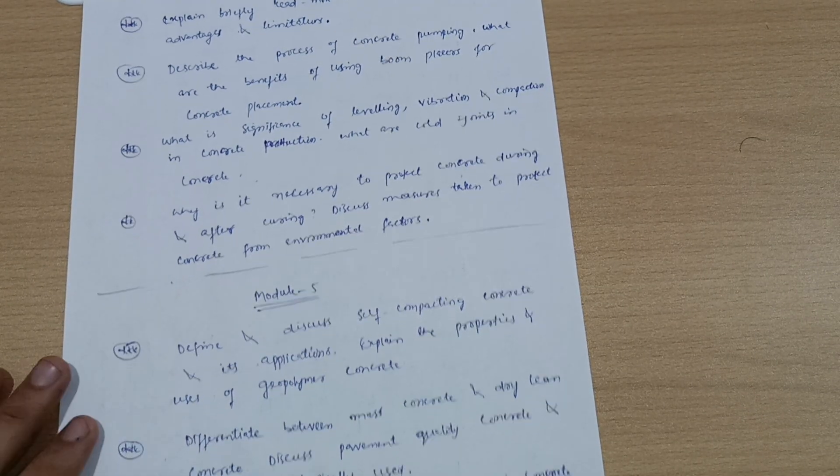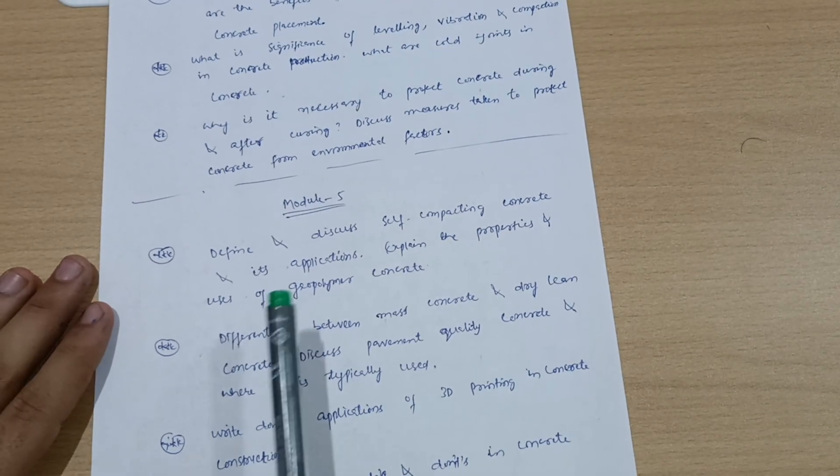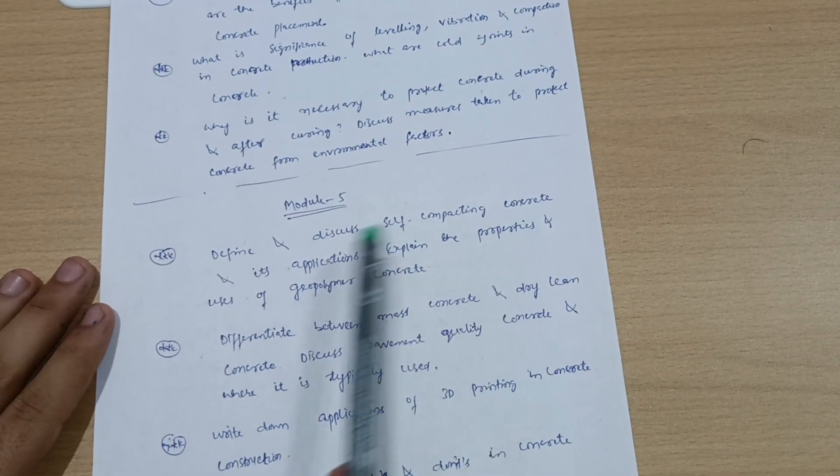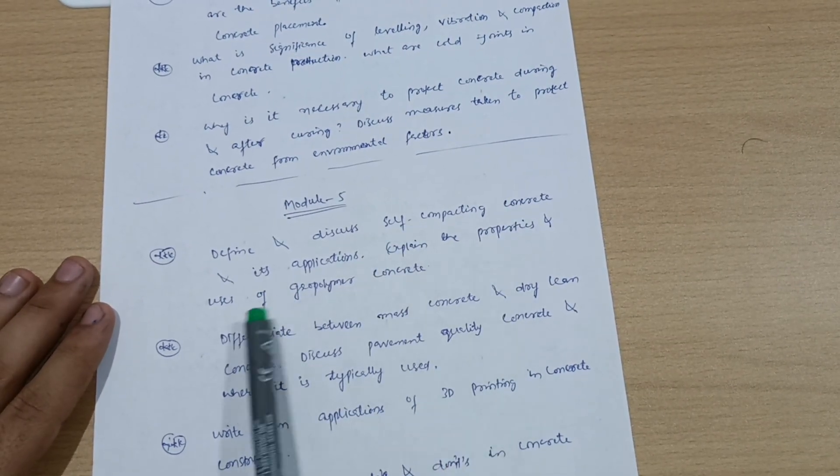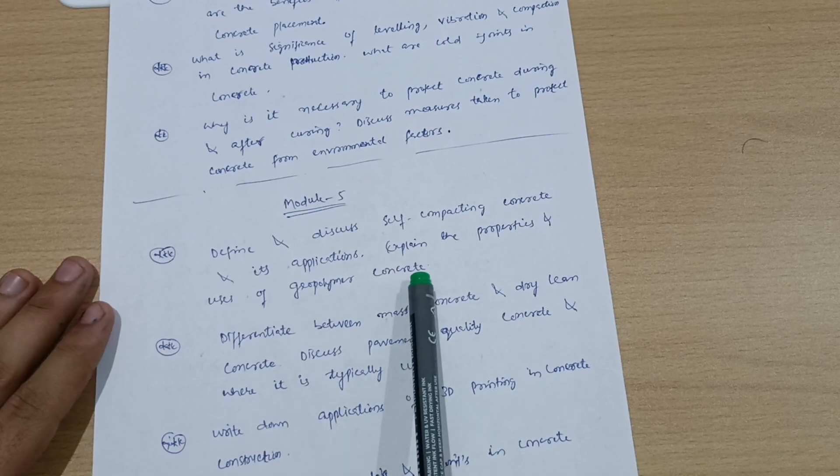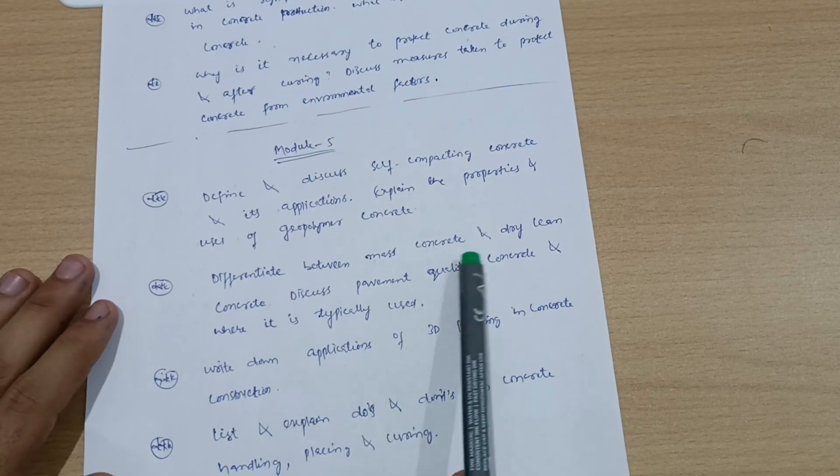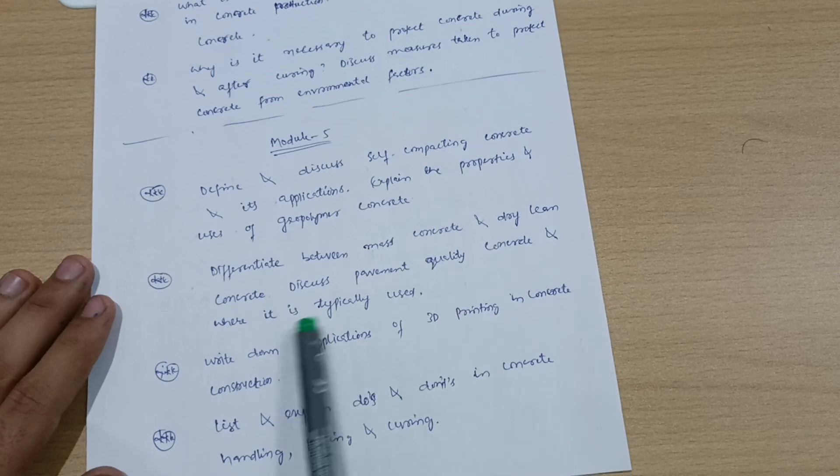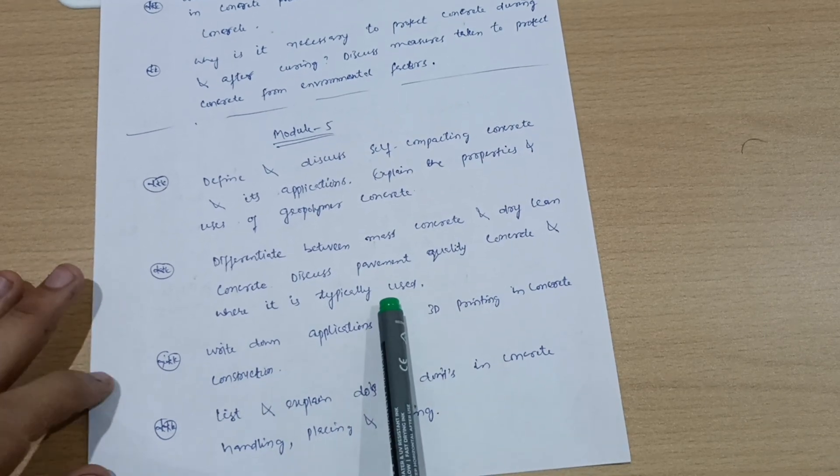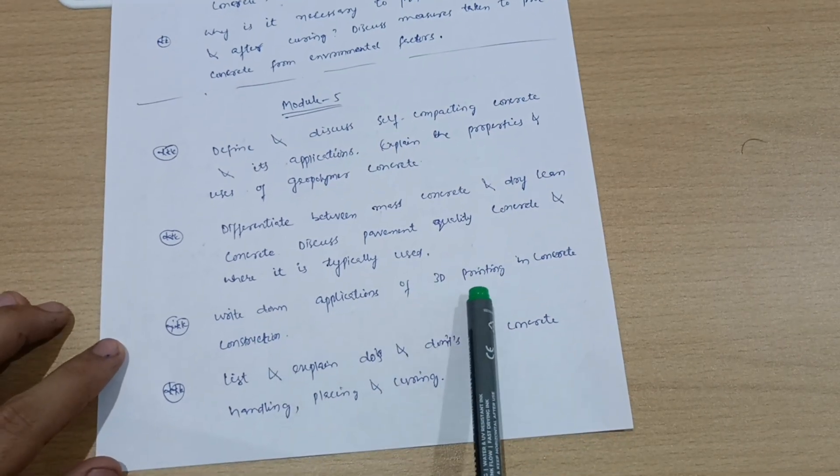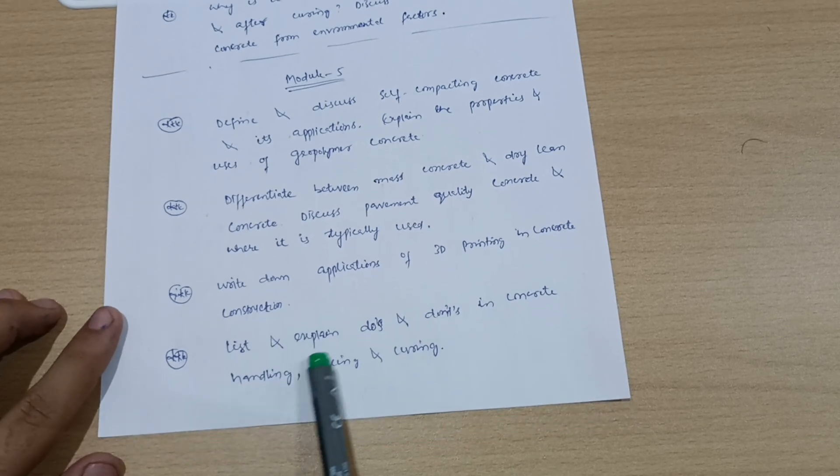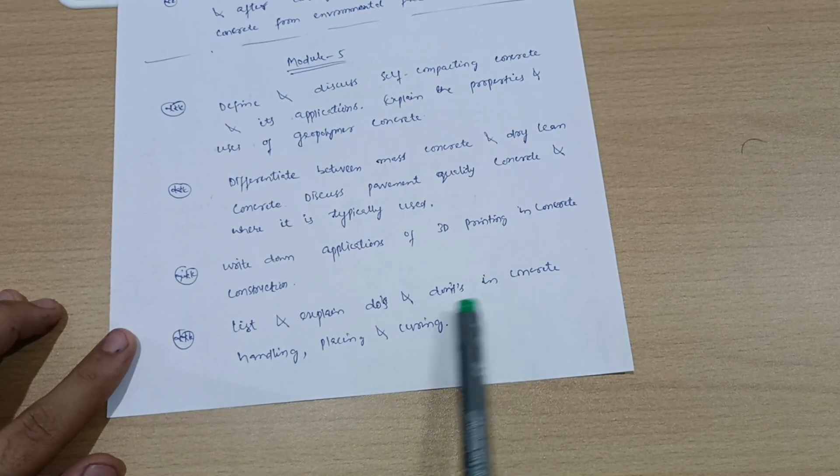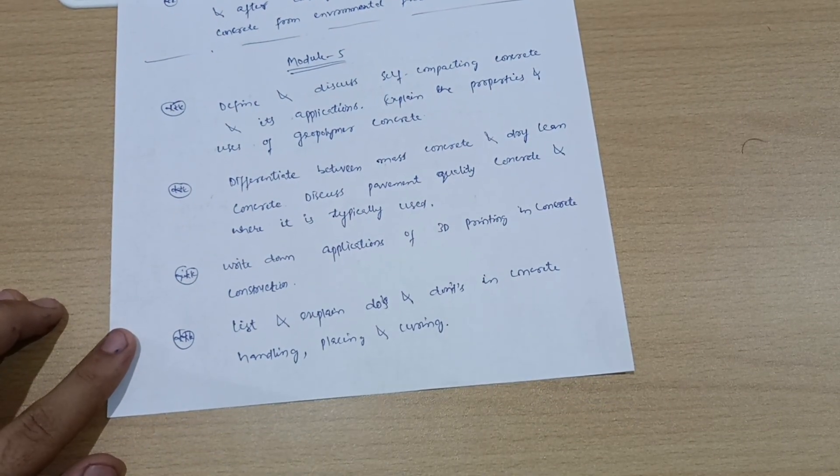Next is Model 5. We have some super important questions like define and discuss self-compacting concrete and its applications. Explain the properties and uses of geopolymer concrete. Differentiate between mass concrete and dry lean concrete. Discuss pavement quality concrete and where it is typically used. Write down applications of 3D printing in concrete construction. List and explain dos and don'ts in concrete handling, placing, and curing.